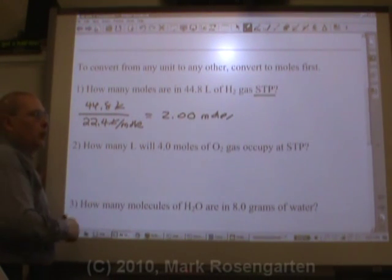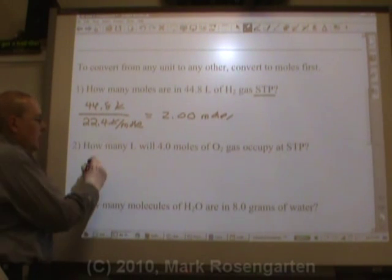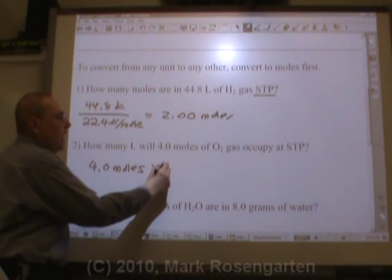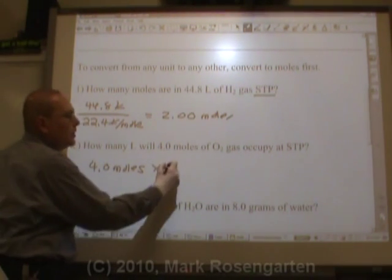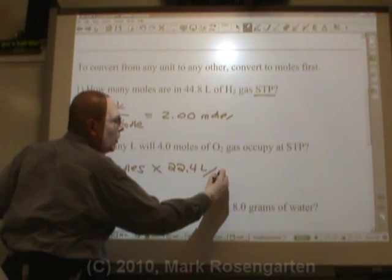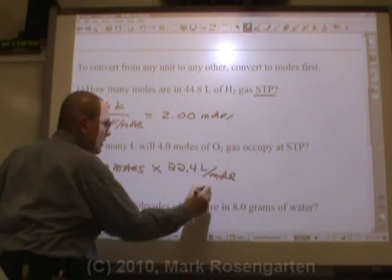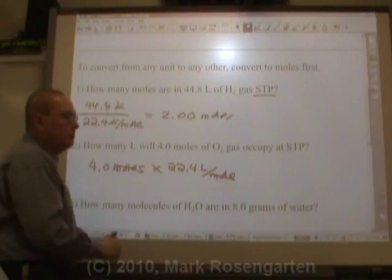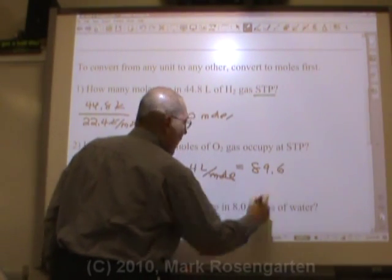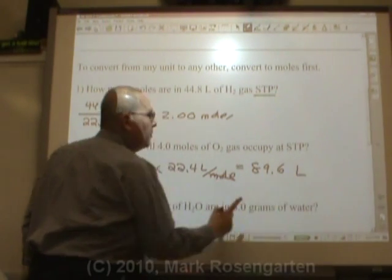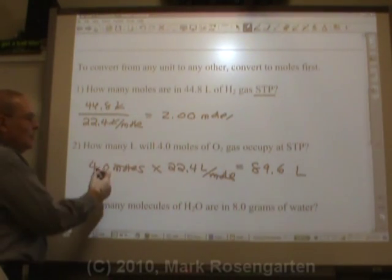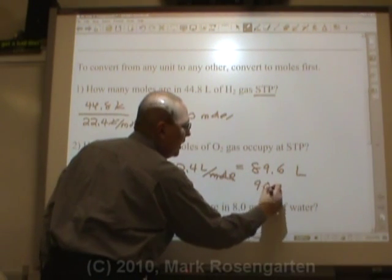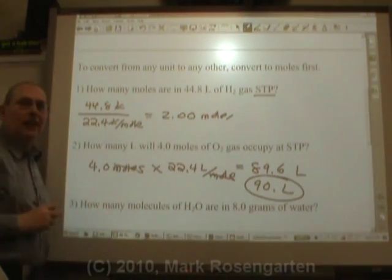How many liters will 4.0 moles of O2 gas occupy at STP? If you're starting with moles, you multiply by your conversion factor. Since we're doing liters, we use 22.4 liters per mole. This way moles will cancel. And 4 times 22.4 is 89.6. And because moles cancel, that leaves us with liters. But wait, we're not done yet. Two significant figures, three significant figures, I've got to round that off to two significant figures. Ninety decimal point liters. Final answer.